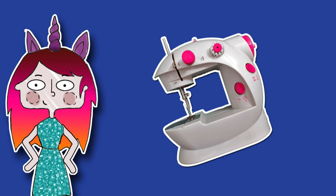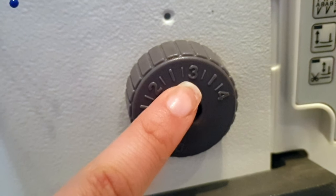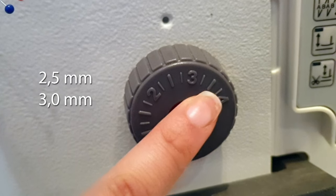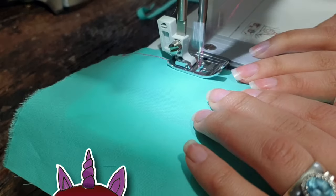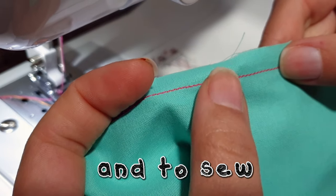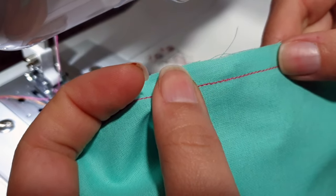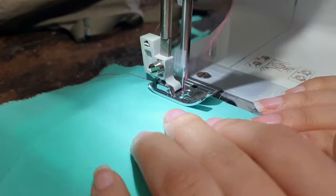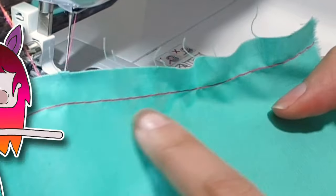First you will need your sewing machine of course and you need to set your stitch length to two and a half millimeters up to three millimeters. If you do less than that it will take forever to remove it in case you make a mistake. If you do longer than that then your fabric will start gathering and the final result will be ridiculous.